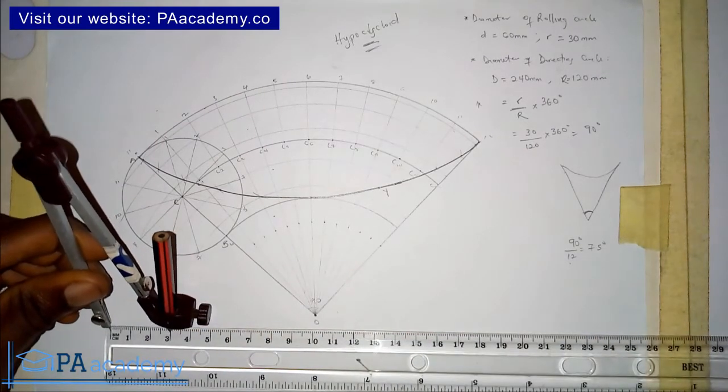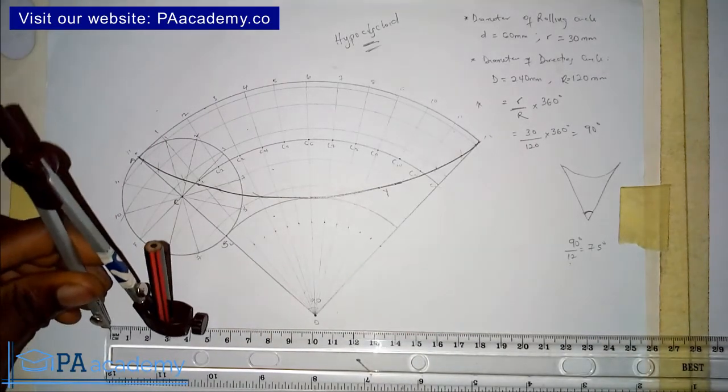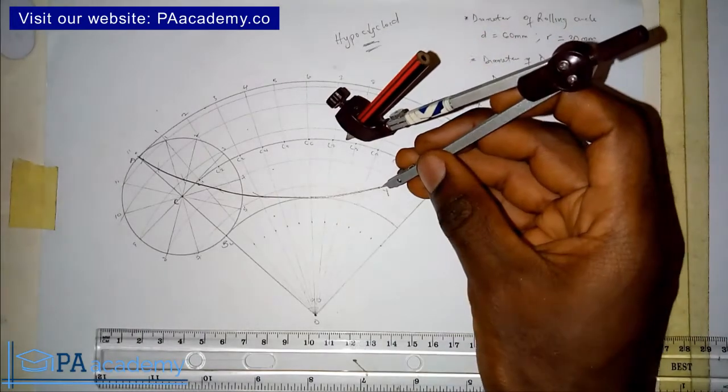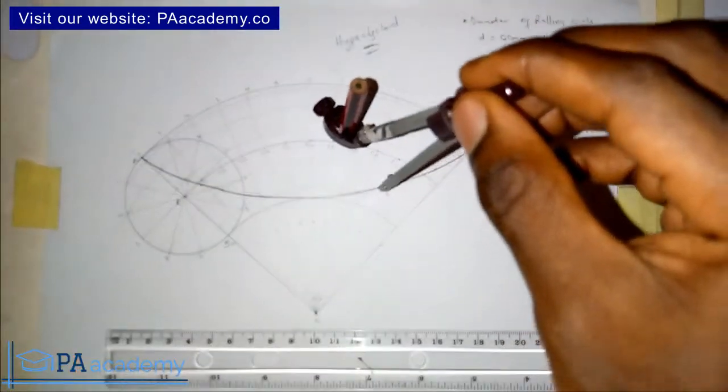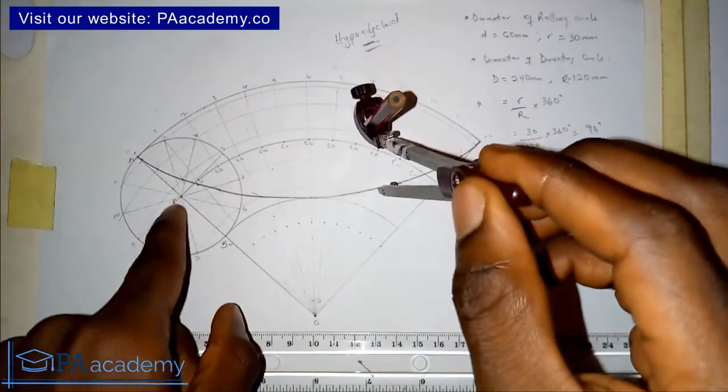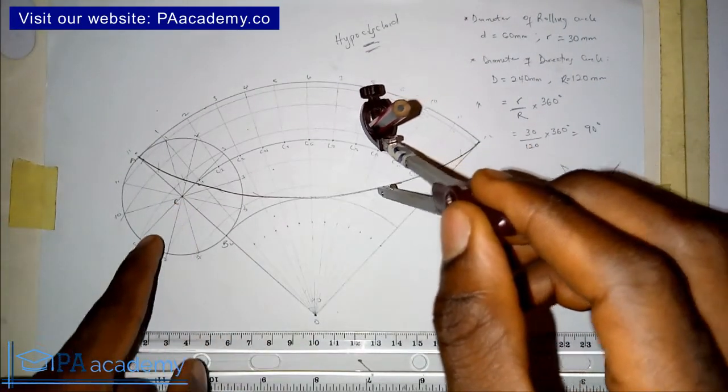I already have my compass to be on 30 millimeters, which is the same as three centimeters. So I'll place it on that point and draw and cut this line that is coming from point C on the rolling circle.